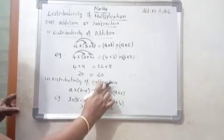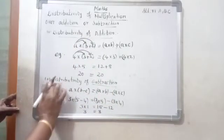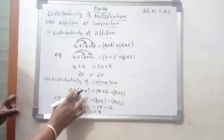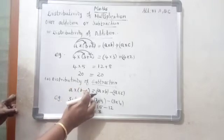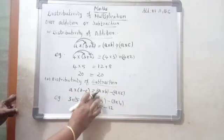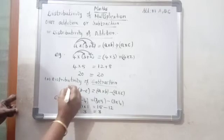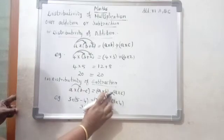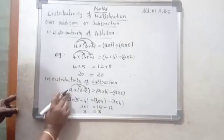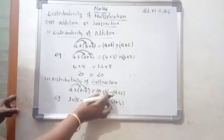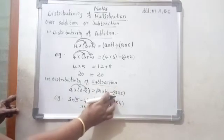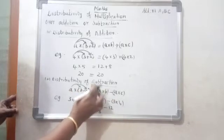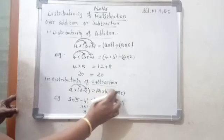Next: distributive of subtraction. The addition rule is over. Now the second rule: subtraction. What is the form? A into, put the bracket, B minus C. So the expansion is: A into B minus A into C. First product number: A into B. What is the sign? Minus. Next, another product number: A into C.